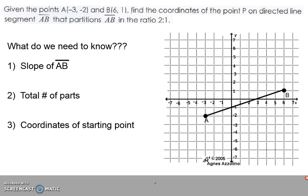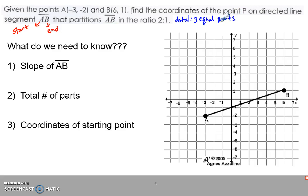On the directed line segment AB, A is my starting point and B is my endpoint. When it partitions AB in the ratio two to one, that means the first segment is two times the second segment. So two to one gives me a total of three equal parts, meaning I'm going two-thirds of the way down the line.